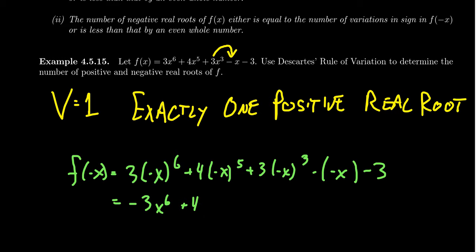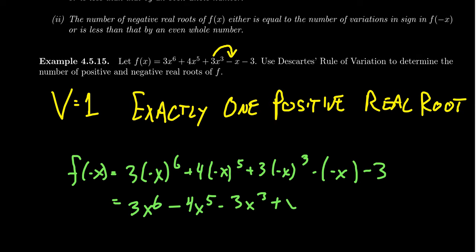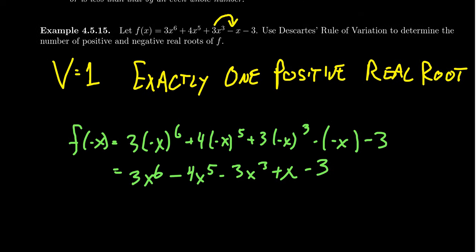With an even power, the negative is going to go away. So you're going to get 3x^6. Then with the odd one, you're going to get -4x^5. This one here is odd, so we get -3x^3. This one here is likewise odd, so you're going to get positive x. It switches the signs to what it was before and you get -3.